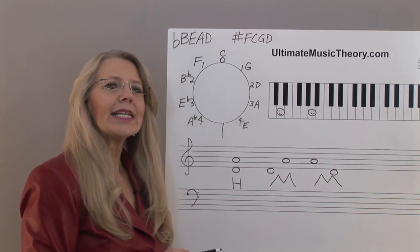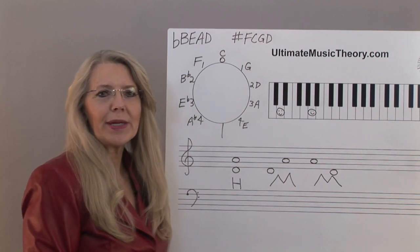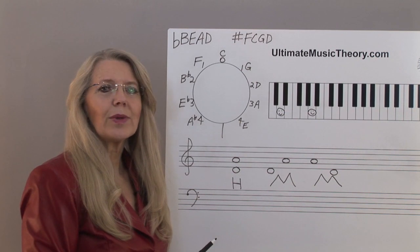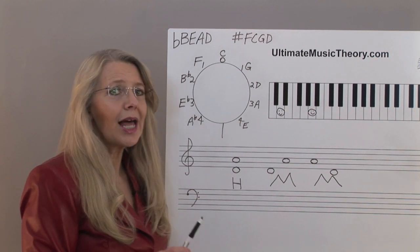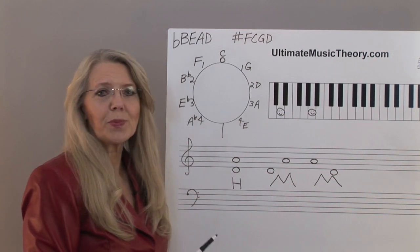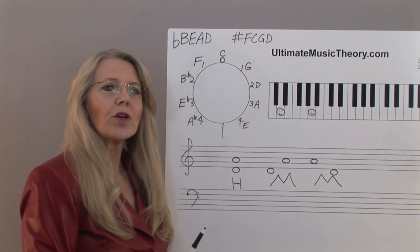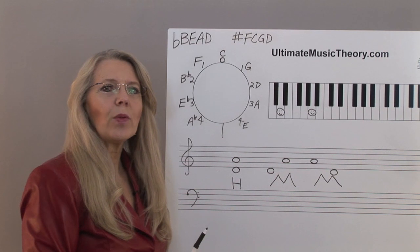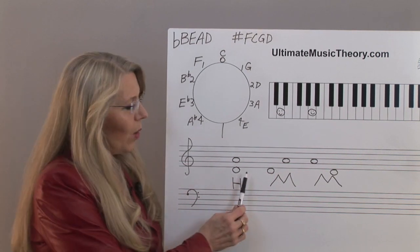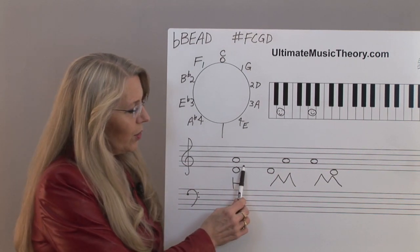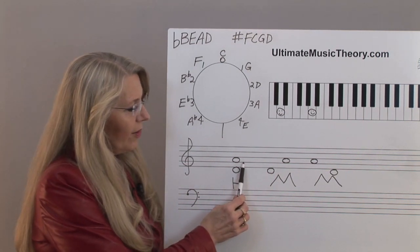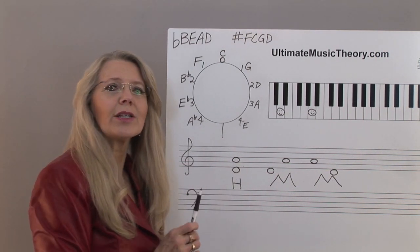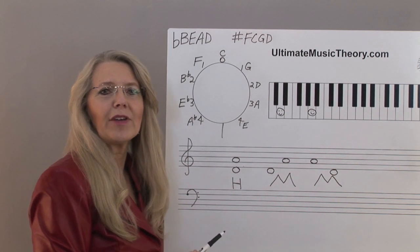An interval is the distance and pitch between two notes. We count each line and each space. So, for example, D to A — we count 1, 2, 3, 4, 5. This is called an interval of a fifth.